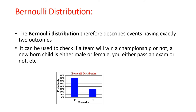Let us start with the first one: Bernoulli distribution. This describes events that have exactly two outcomes. The scenario is when an event will happen and there is a possibility of only two outcomes. For example, when we toss a coin, there are two possibilities — either heads or tails. Similarly, a newborn child is either male or female, or a student will pass or fail. When the result will be only two possible outcomes, we apply Bernoulli distribution for data analysis.